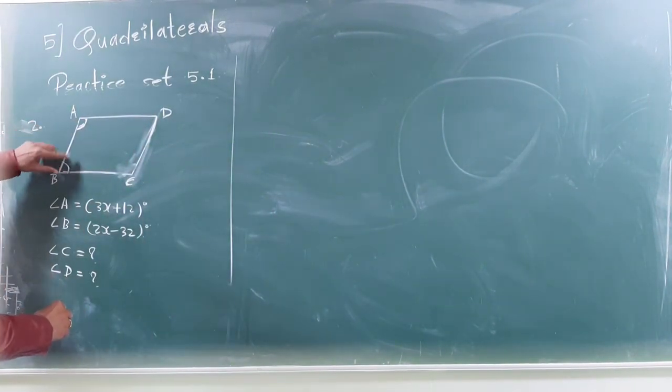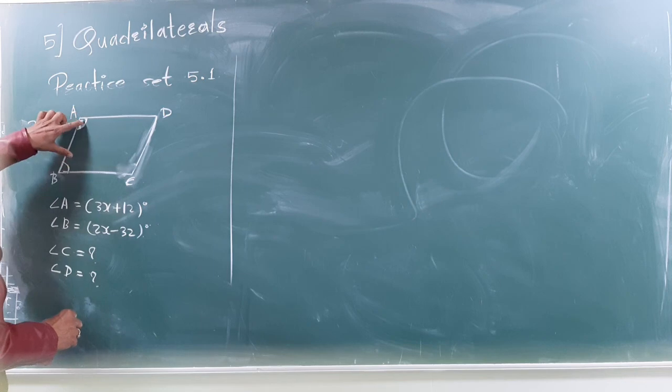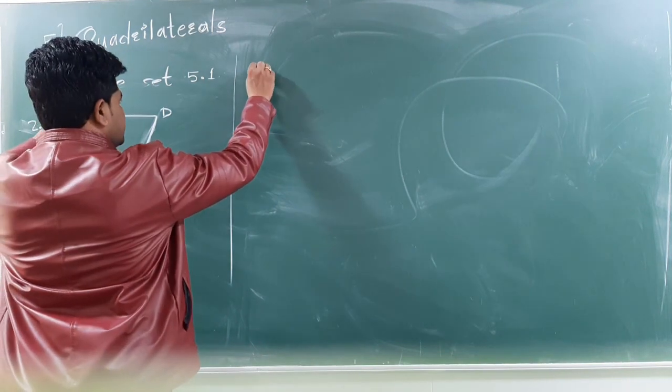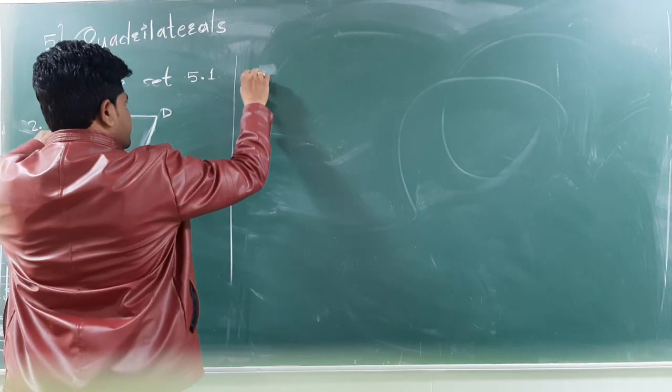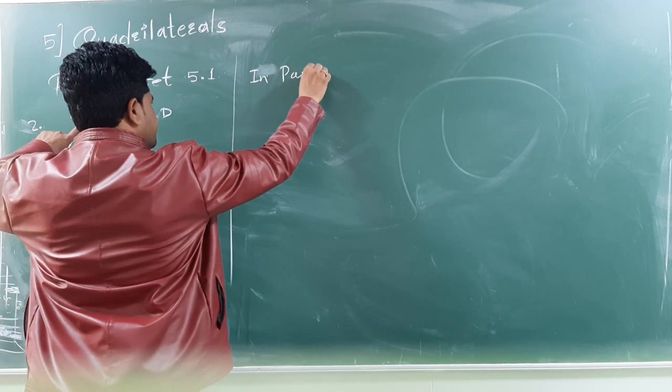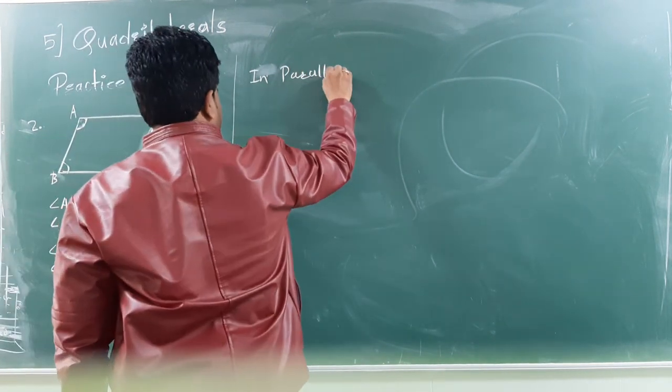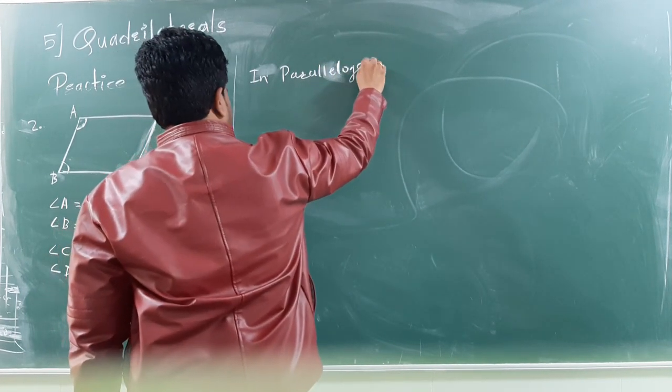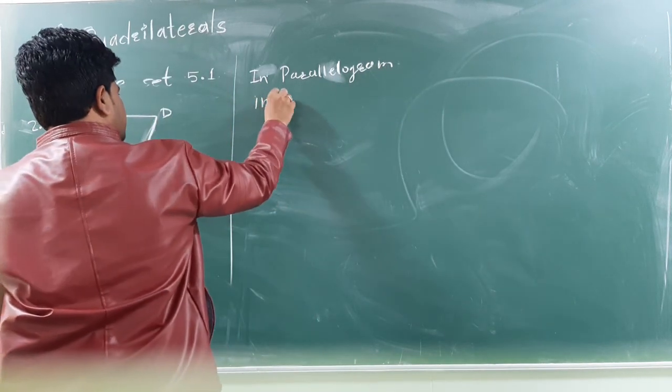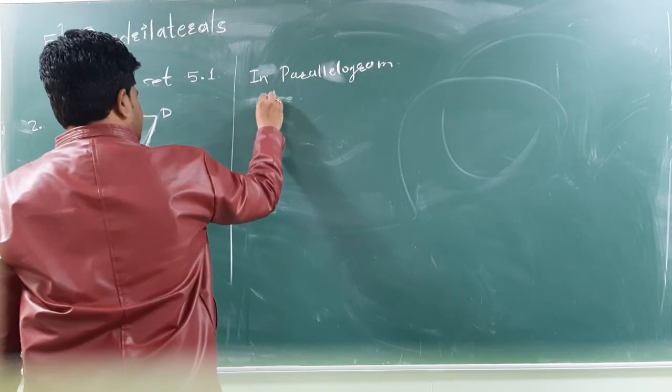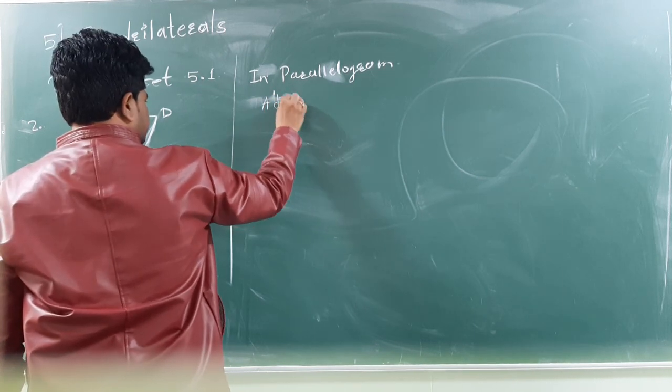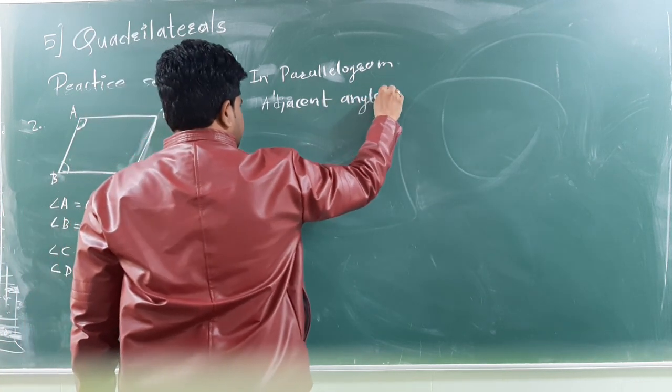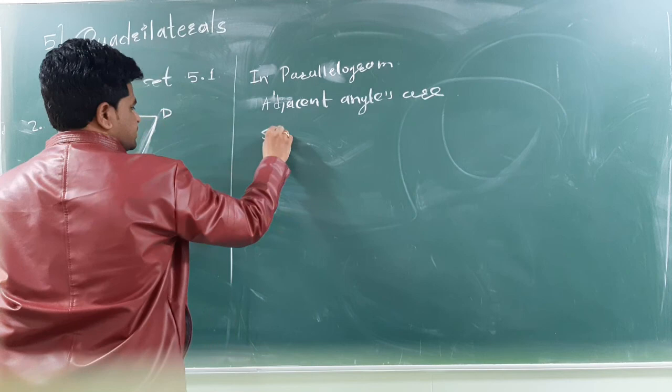As we know, the angle A and angle B, both are, according to parallelogram property, these are the supplementary angles. So, in parallelogram, adjacent angles are supplementary.